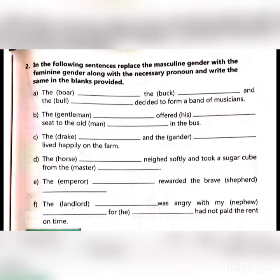What is the feminine of boar? It is sow. The buck — feminine gender is doe. And the bull — feminine gender is cow.